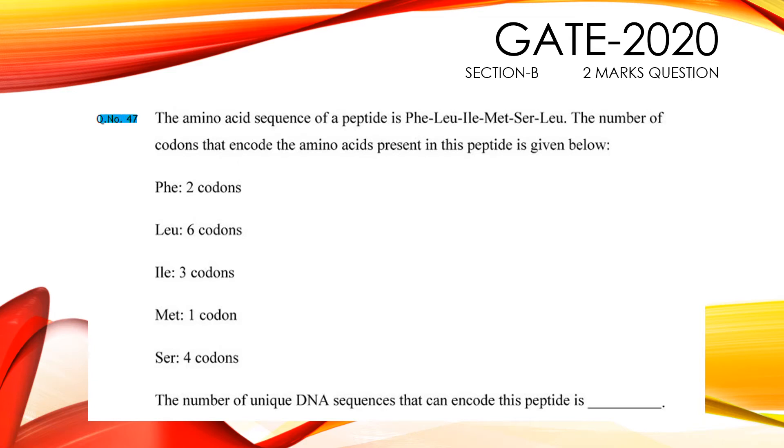The amino acid sequence of a peptide is phenylalanine, leucine, isoleucine, methionine, serine, and in last leucine.